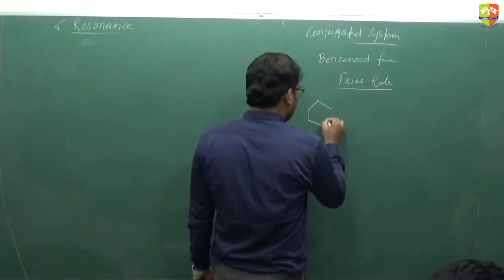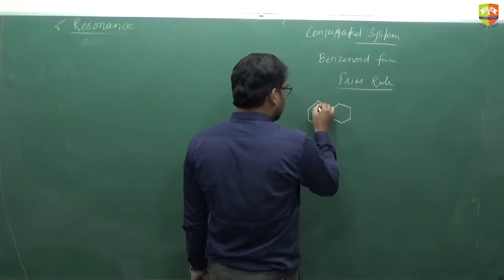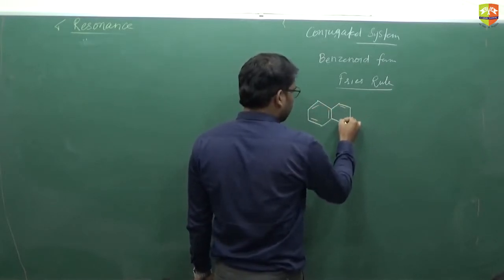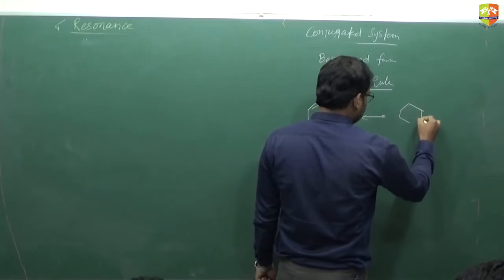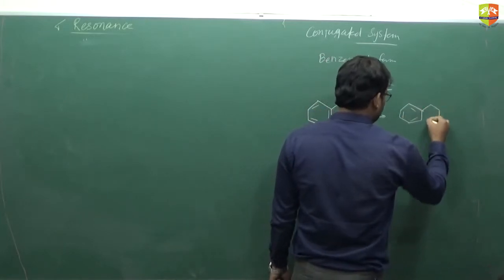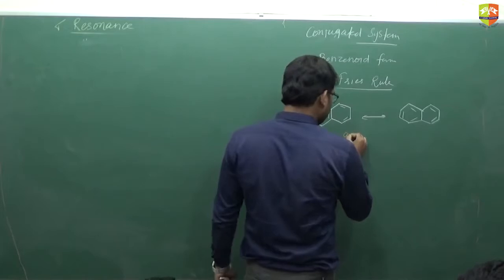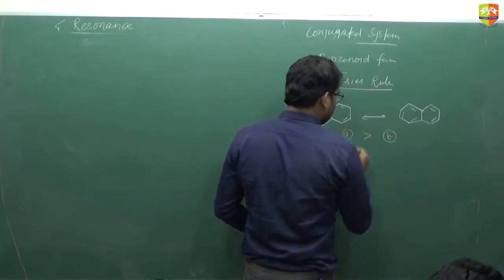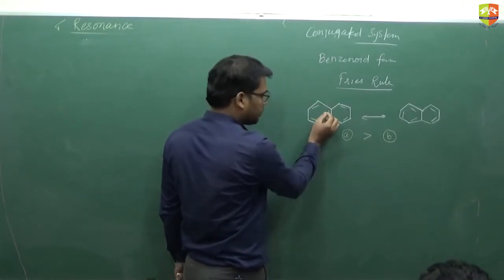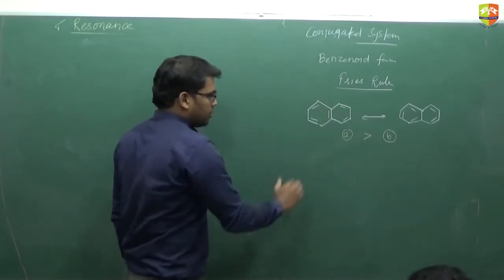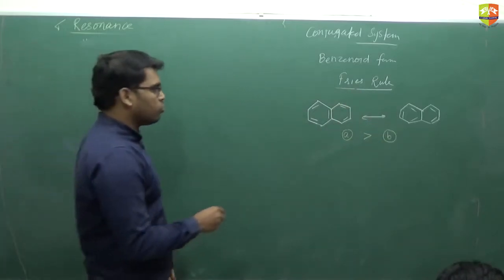What is this? This is for specific compounds when we have a cyclic ring. This is one structure, and when you draw the resonating structure, you get another structure. In this case, A is more stable than B. Why? Because A has two benzenoid forms — this is a benzene ring, and this is also a benzene ring. This five-membered bond is shared between the two rings, so A has two benzene rings and is more stable than B.